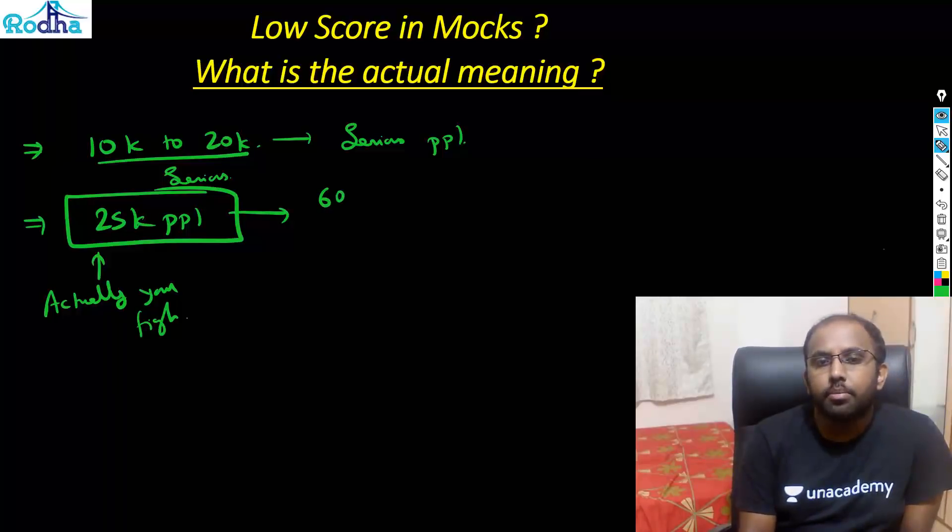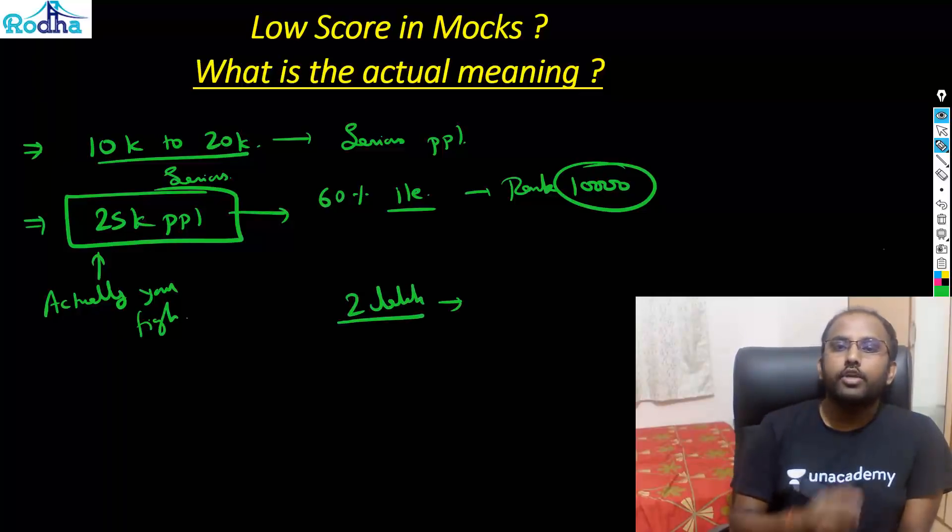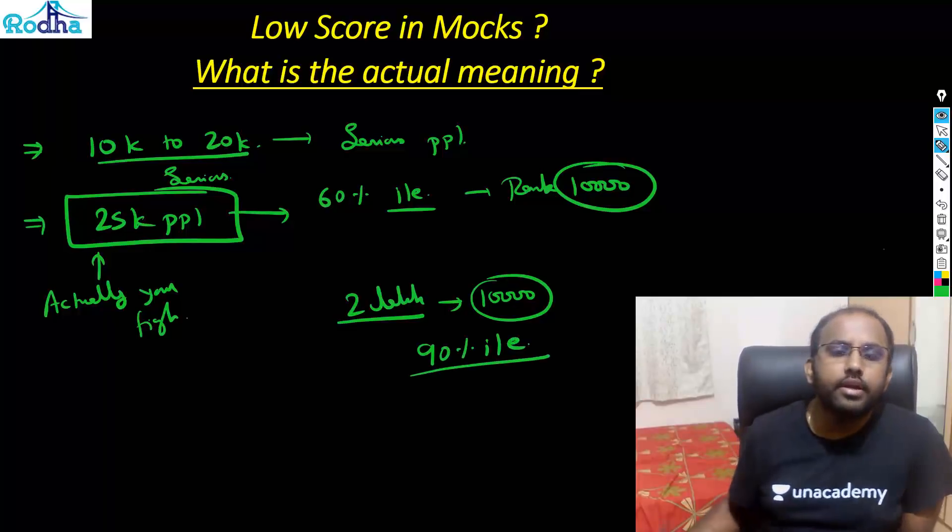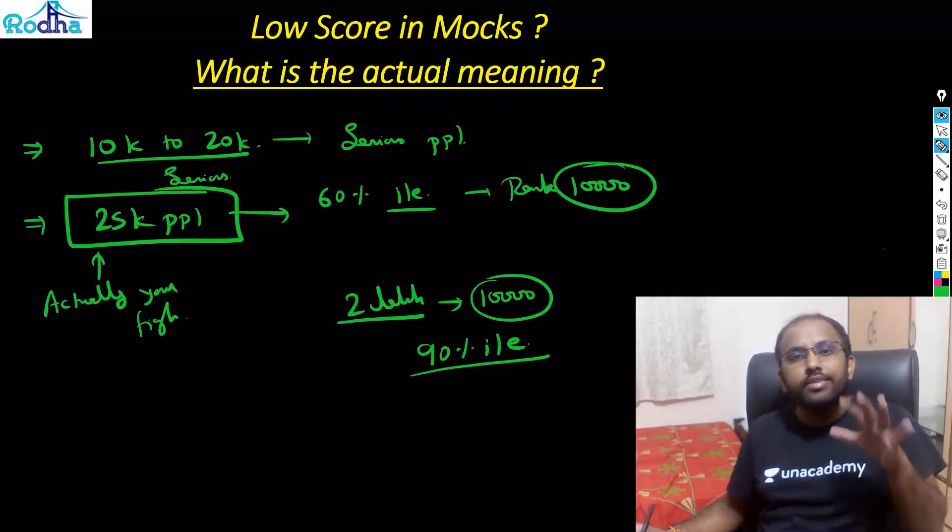Because out of this 25k people here, let's say you have got 60 percentile here. If you have got 60 percentile here, that means your rank is roughly 10,000. If your rank is roughly 10,000, so in CAT suddenly you will be sitting among 2 lakh people. And in this 2 lakh people, actually if your rank is 10,000, then it actually becomes 90 percentile. It becomes 90 percentile.